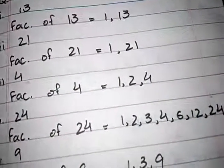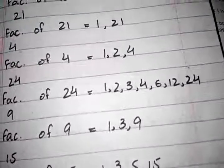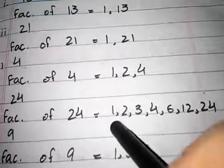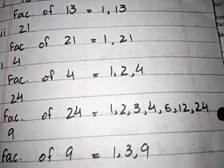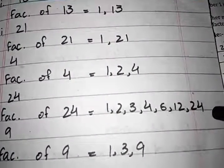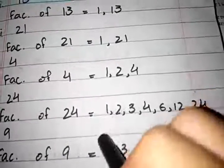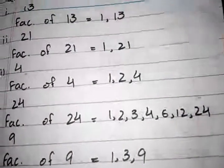Factors of 24 are 1, 2, 3, 4, 6, 12, and 24. These all numbers can be divided by 24 without any remainder, so these are all the factors of 24.